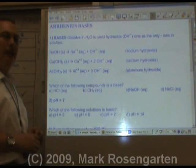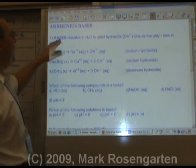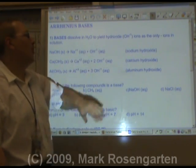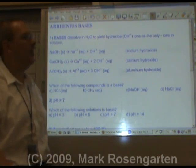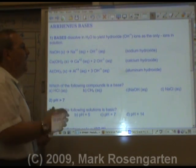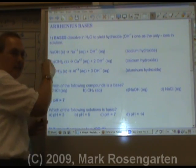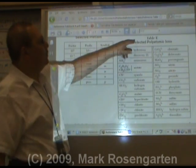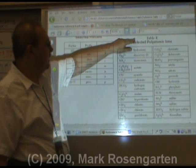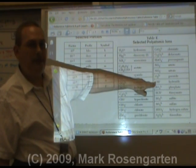Arrhenius bases: acids give up H+, bases give up OH minus — hydroxide ions — as the only negative ions in solution. Bases are metal hydroxides. As you can see from table E, the hydroxide ion is OH minus 1.